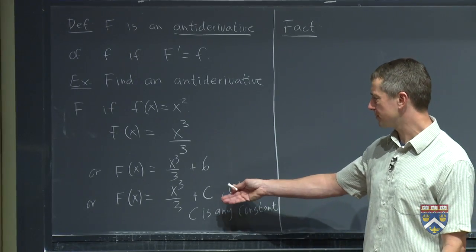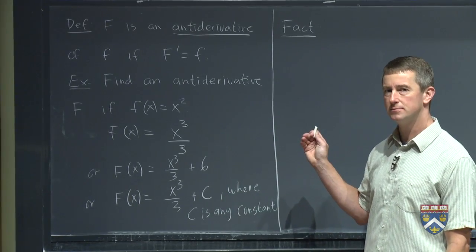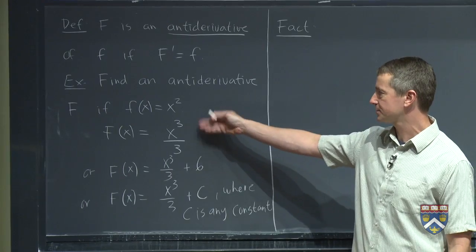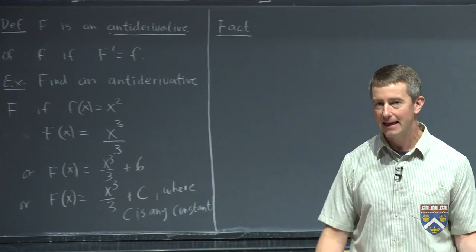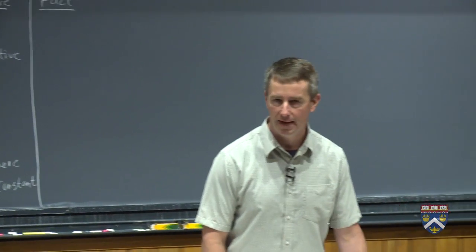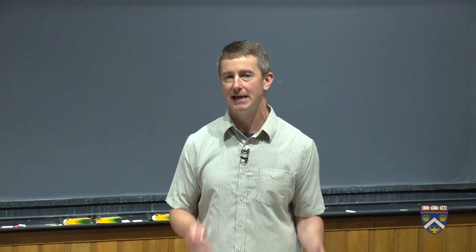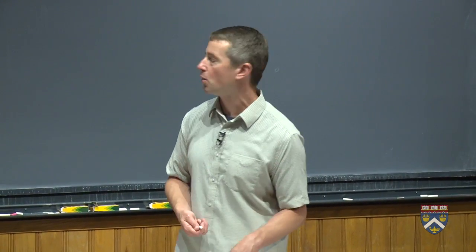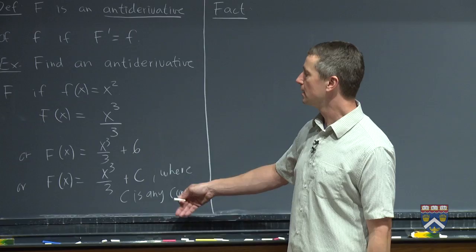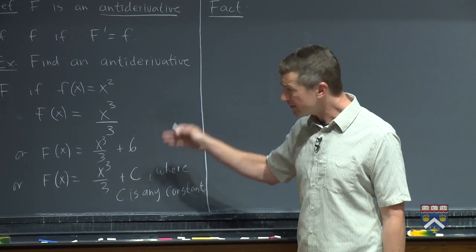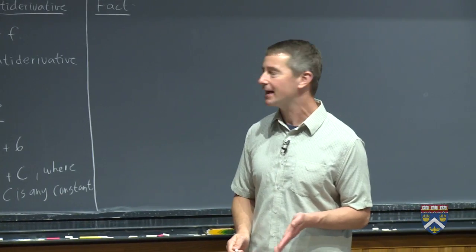Could we put anything besides a constant? Could I put like an x squared there? No, because if I put an x squared, I'll get a 2x, which I'm not supposed to get. Could I put an e to the x, a cosine of x, a natural log of x? None of those will work, right? Because when we take the derivative, those things don't go away like these constants do.